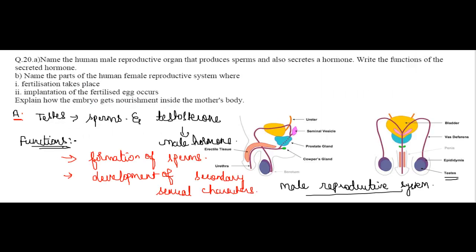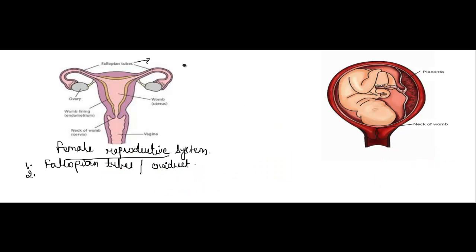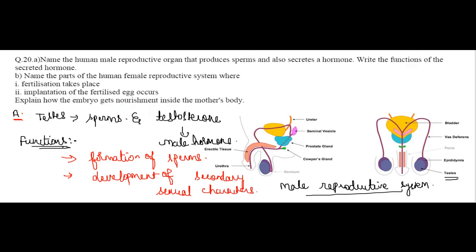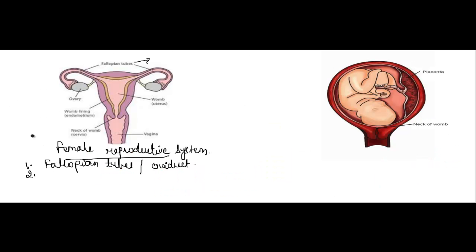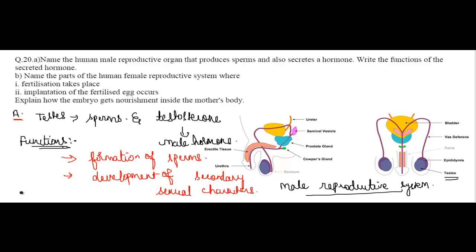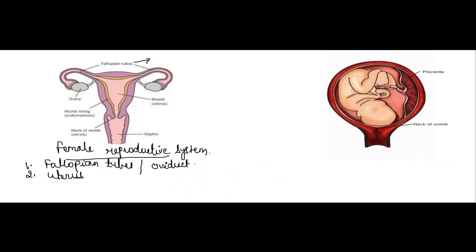Implantation of the fertilized egg occurs in the uterus. The sperms travel all along through the uterus and reach the fallopian tube, where they fuse with the egg cell and fertilization takes place. This fertilized egg then comes and gets embedded and planted on the walls of the uterus — that is what we call implantation.